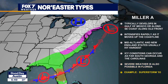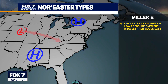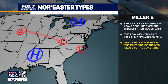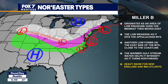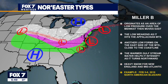Miller B nor'easters originate as an area of low pressure over the midwest, then move eastward. The low pressure moves over the Appalachian mountains and begins to weaken, then another low pressure forms on the east side of the mountains close to the coastline. The warmer Gulf Stream water helps it intensify as it turns northward, and this setup usually results in heavy snow for New England and the mid-Atlantic.